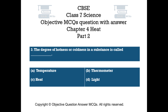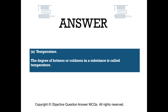Question number 3. The degree of hotness or coldness in a substance is called — Option A: temperature, Option B: thermometer, Option C: heat, Option D: light. The right answer is Option A — Temperature. The degree of hotness or coldness in a substance is called temperature.